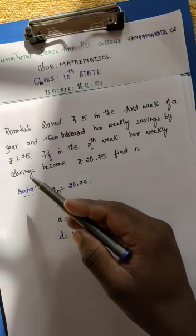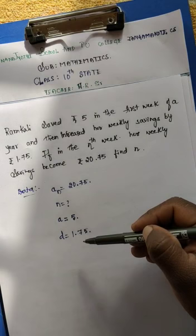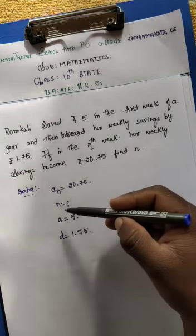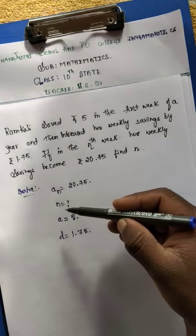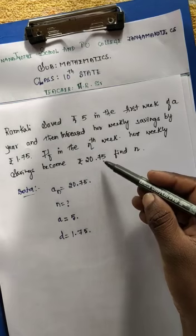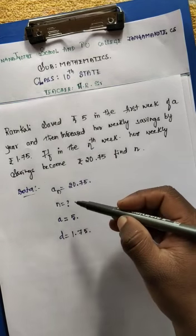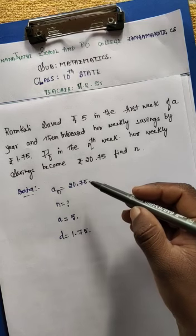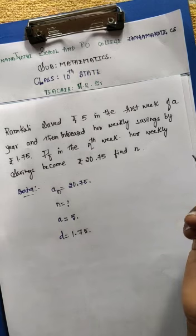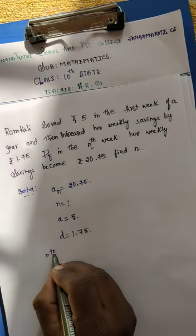Then increased her weekly savings by rupees 1 rupee 75 paisa — that is the common difference d equals 1.75. If in the nth week, that is n, we need to find aₙ, the number of weeks. Her weekly savings becomes 20 rupees 75 paisa — so that is the last term, the total number of terms in the given sequence. So aₙ equals 20 rupees 75 paisa. Find n.